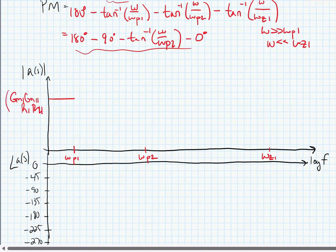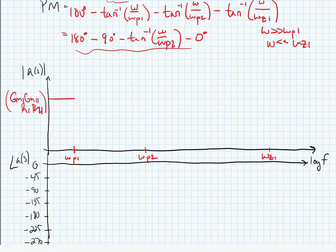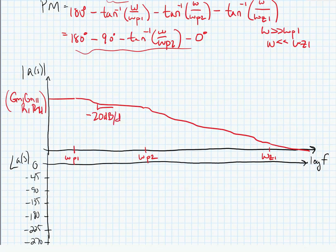It's going to start rolling off at 20 dBs per decade. It's going to have a slope change and then another slope change. Here the slope is minus 20 dBs per decade, here the slope is minus 40 dBs per decade, and after the zero it ends up going back to minus 20 dBs per decade.